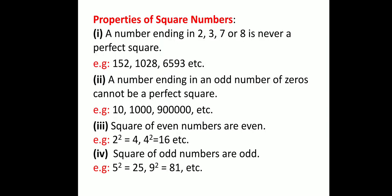Coming to the properties of square numbers. The very first property is: a number ending in 2, 3, 7, or 8 is never a perfect square. For example, 152 has 2 in its unit place, 1028 has 8 in its unit place, 6593 has 3 in its unit place — so all these numbers are not perfect squares. You can verify by taking the prime factorization of these numbers.